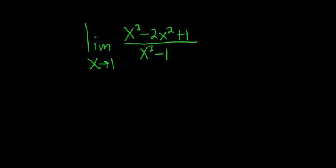Whenever you're finding limits, the first thing you should always try is to plug in the number. So if we plug in 1, we get 1 minus 2, because 1 squared is 1 and 1 cubed is 1, plus 1, over 1 minus 1.